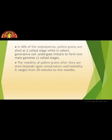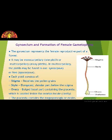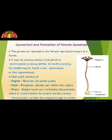Now we will study about female gamete formation and the structure of the gynoecium. What is the gynoecium? The gynoecium represents the female reproductive part of the flower. The gynoecium may consist of a single pistil — monocarpellary — or if it contains many pistils, it is called multicarpellary. If multicarpellary pistils are fused together, it is called syncarpous; if they are not fused together, it is called apocarpous.